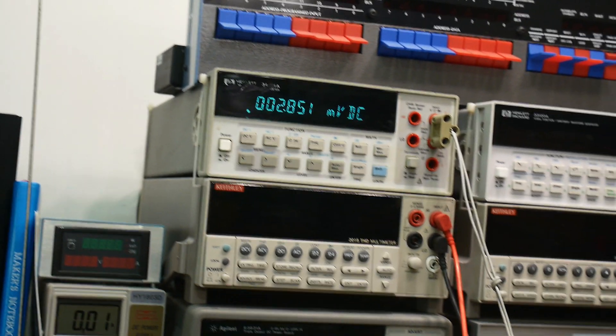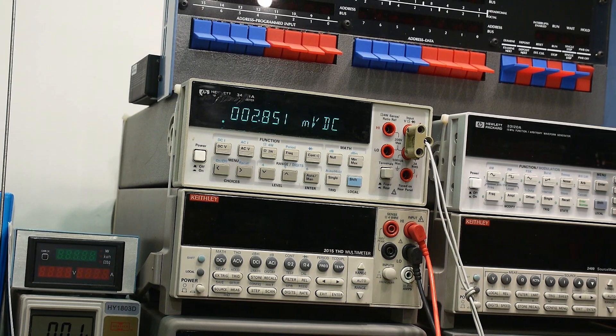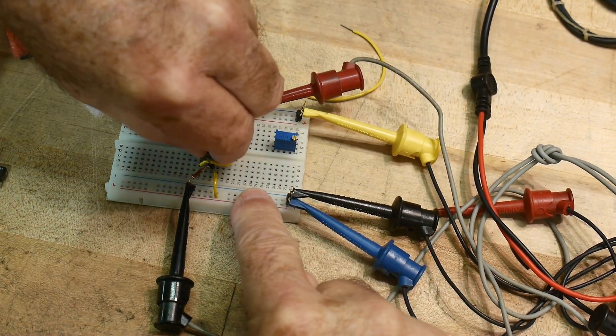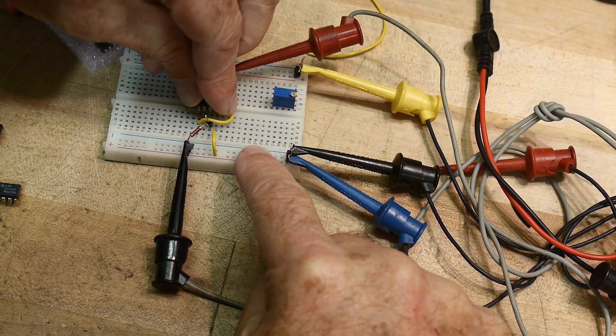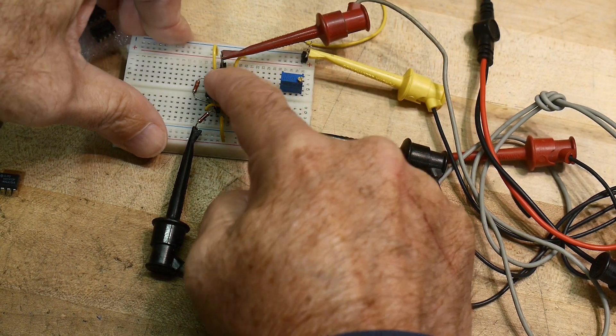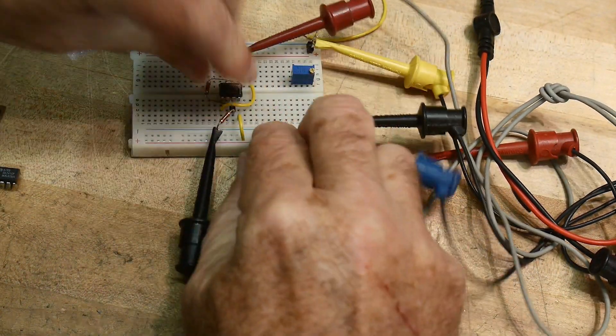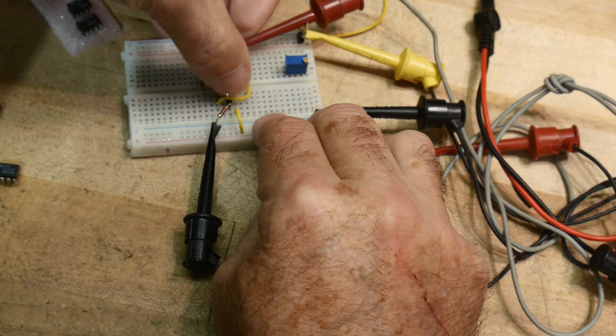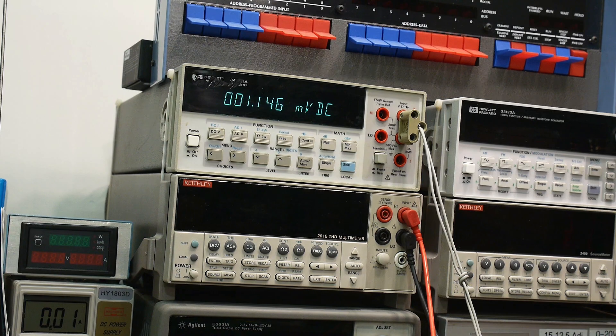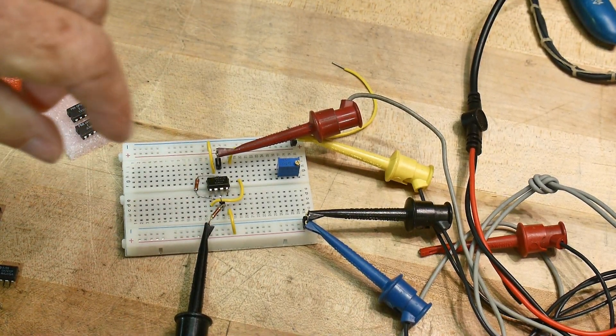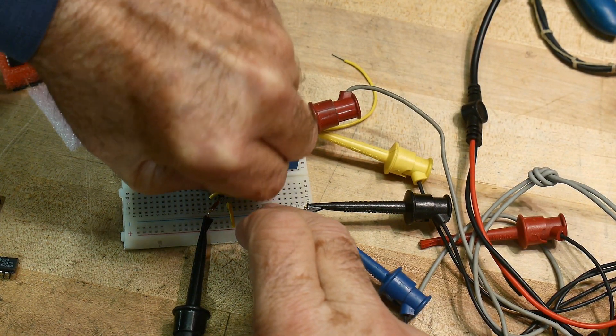And this 741 op-amp is measuring 2.8 millivolts. So that's between one and five. All right, let's pull this one out. Let's put in the other 741 op-amp that I have on the bench here. All right, so this one is a little bit better. It's 1.147. So again, between one and five millivolts. So that's doing what it's supposed to be doing.